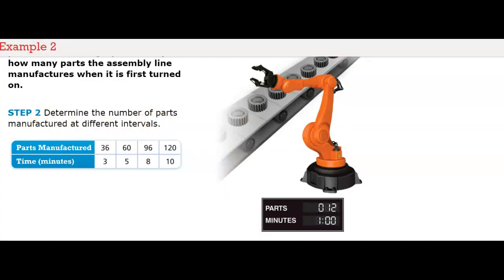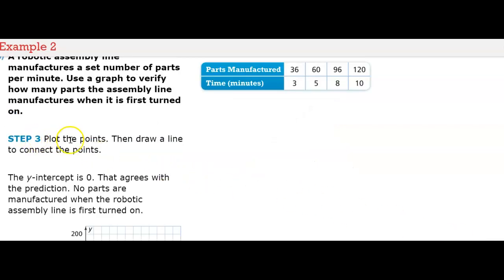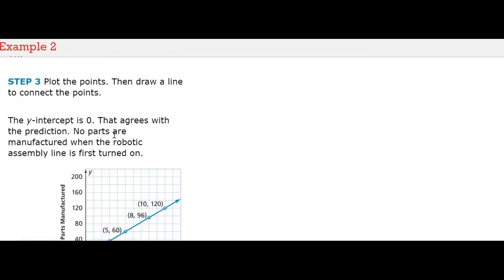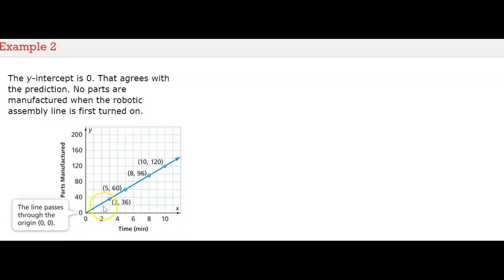Step two: determine the number of parts manufactured at different intervals. After three minutes, 36 parts have been made. After five minutes, 60, and so forth. Step three is plotting those points on the graph. They plotted those points on the graph and then they drew a line to connect those points.